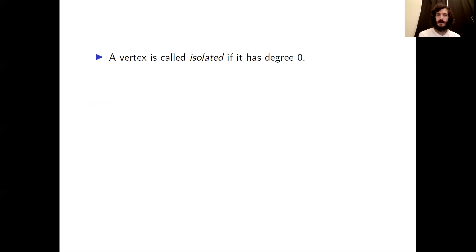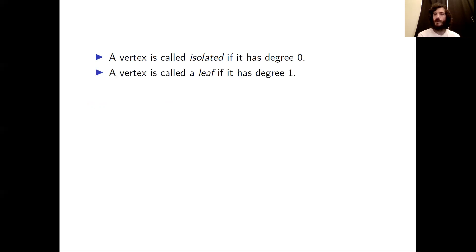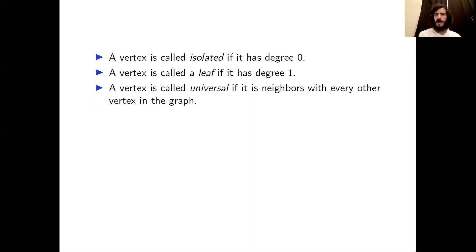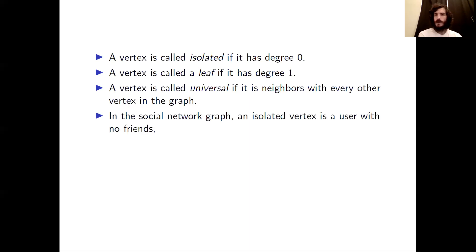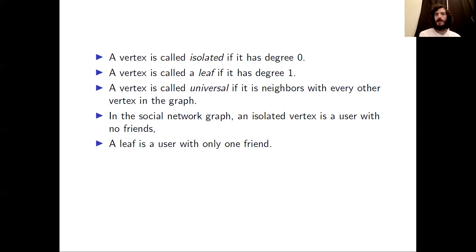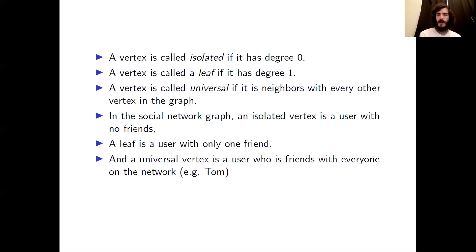Now let's look at some special kinds of vertices. A vertex is called isolated if it has degree zero. If it has degree one, we call it a leaf. If a vertex is neighbors with every other vertex in the graph, we call it universal. In a social network, an isolated vertex is a user with no friends, a leaf is a user with only one friend, and a universal vertex is a user who is friends with everyone — for example, Tom on MySpace.